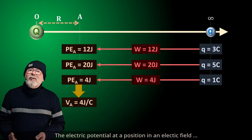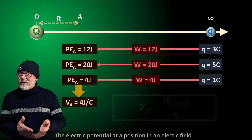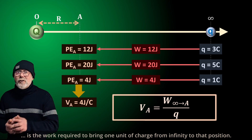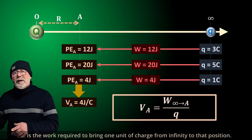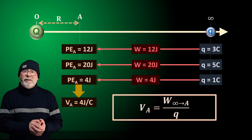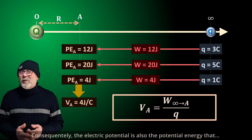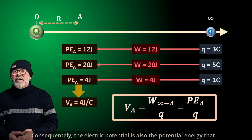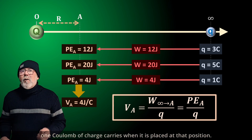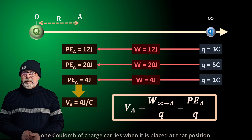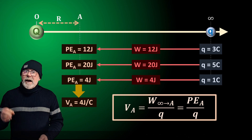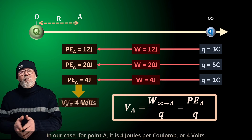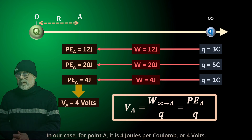The electric potential at a position in an electric field is the work required to bring 1 unit of charge from infinity to that position. Consequently, the electric potential is also the potential energy that 1 coulomb charge carries when it is placed at that position. In our case, for point A, it is 4 joules per coulomb, or 4 volts.